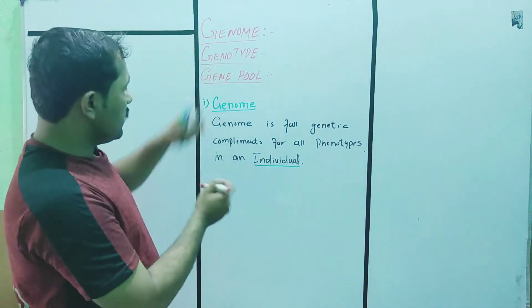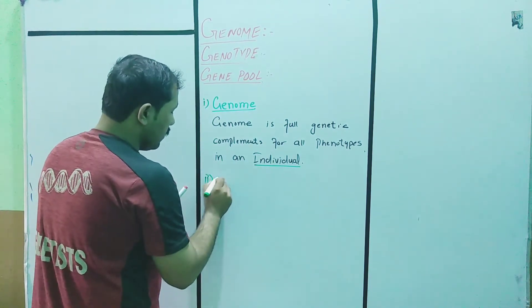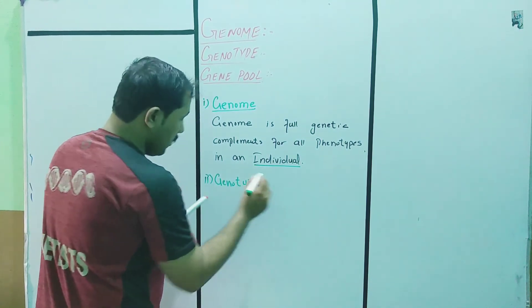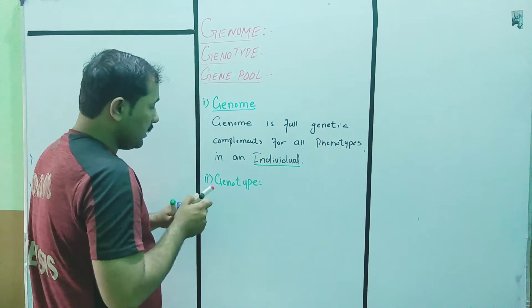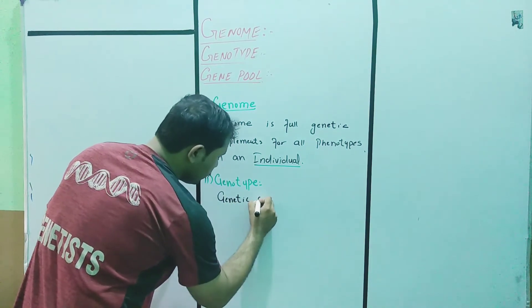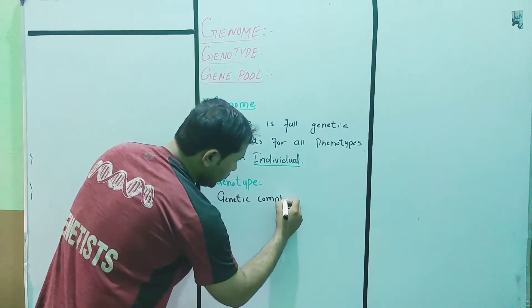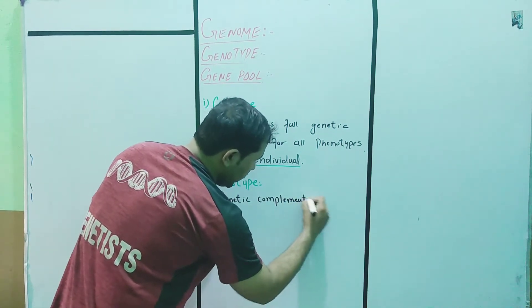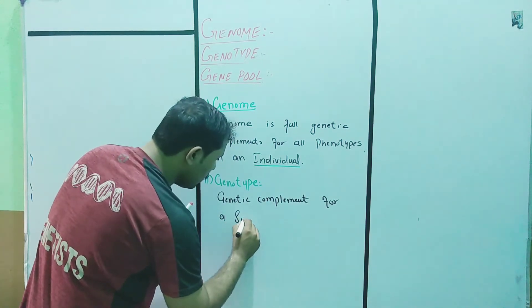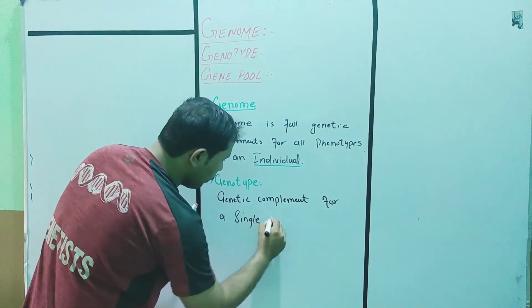The next term is genotype. Genotype is the genetic complement for a single trait.